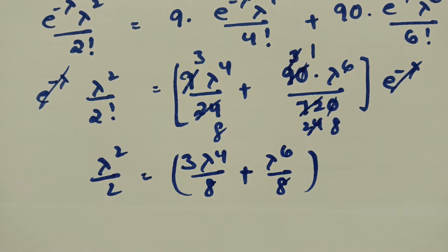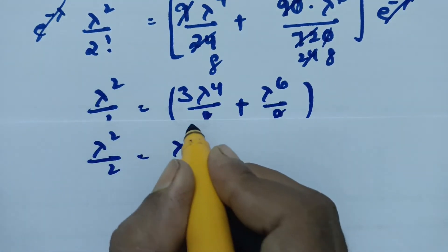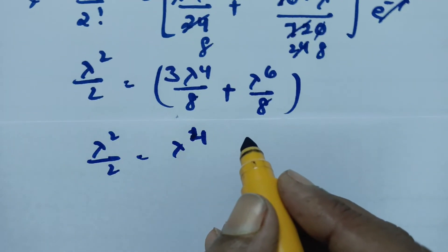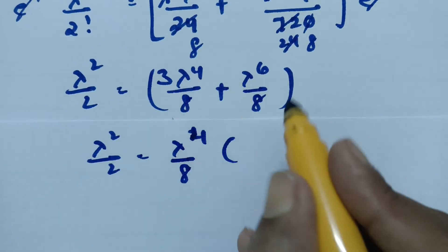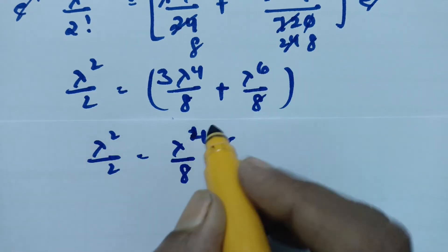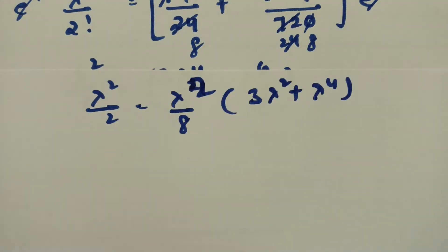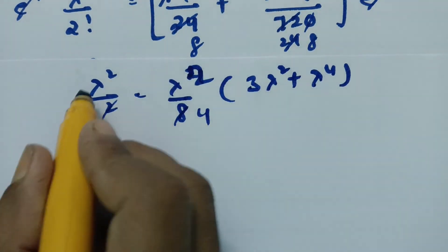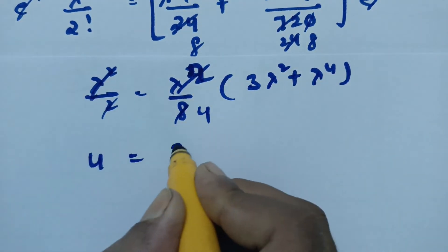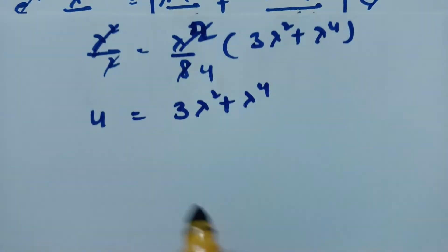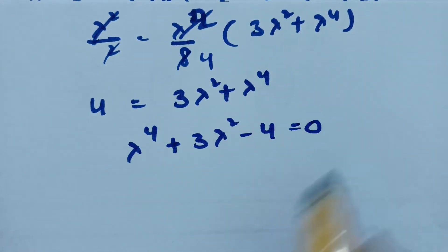Taking lambda squared common from both sides and cross-multiplying: dividing through by lambda squared, we get 4 times the right side equals 3 lambda squared plus lambda to the 4. Rearranging gives: lambda to the 4 plus 3 lambda squared minus 4 equals 0.